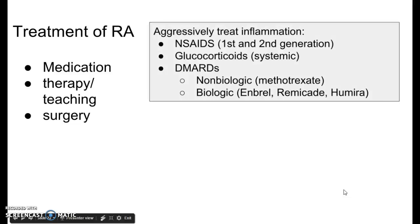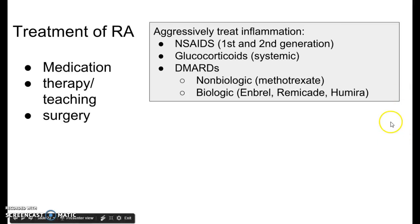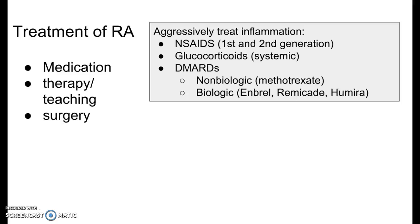We're going to flip back in our book. NSAIDs — I already told you about first and second generation, and I'll talk about those in pharmacology. Glucocorticoids — I already explained how in osteoarthritis we just use the injections, but we want them more systemic, like with prednisone, in rheumatoid arthritis. And then we have DMARDs.